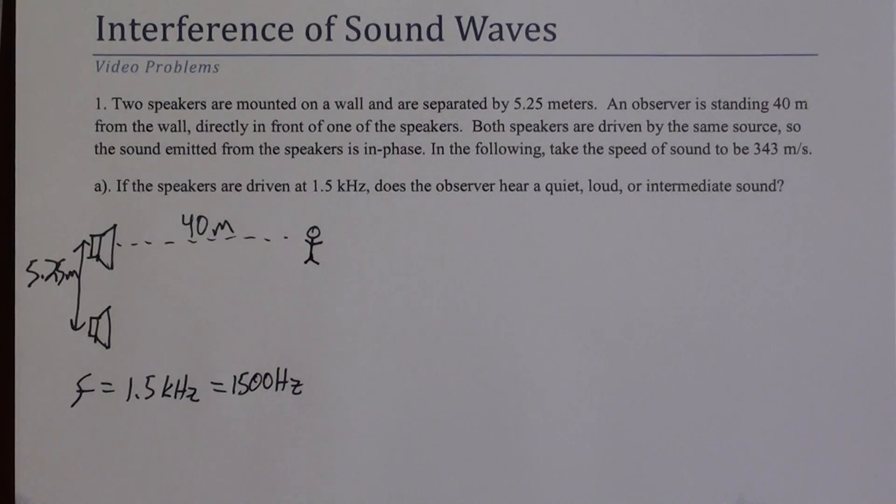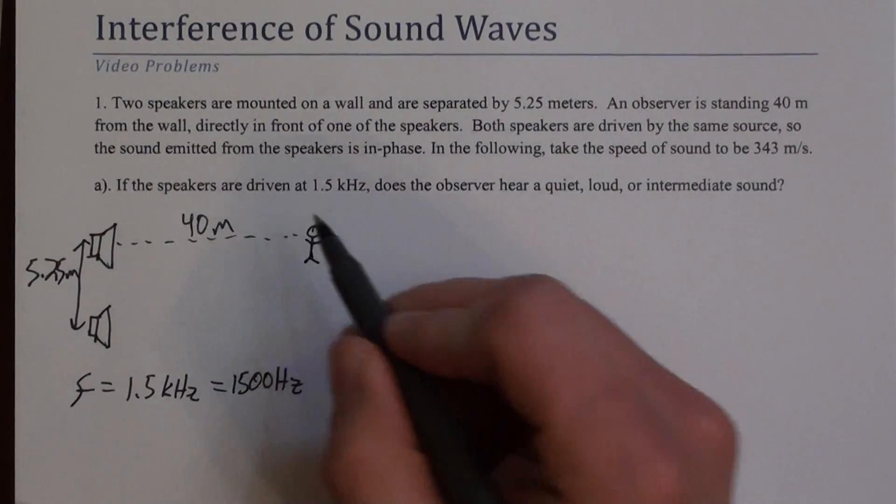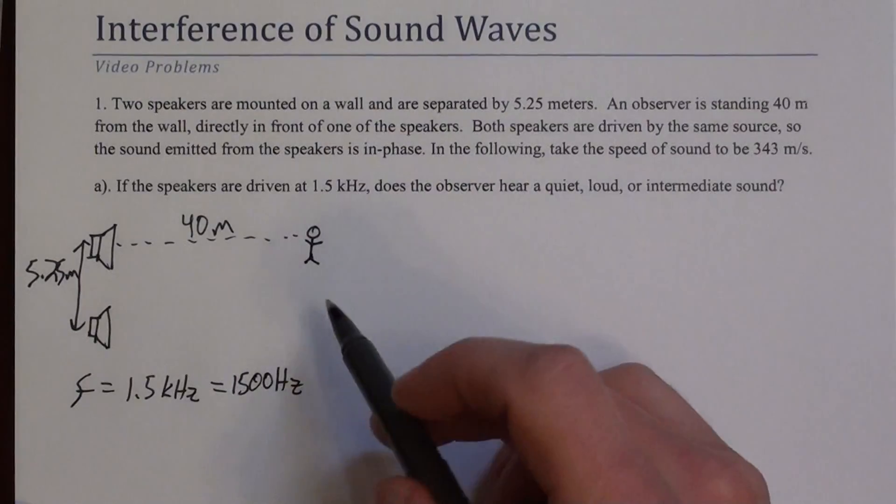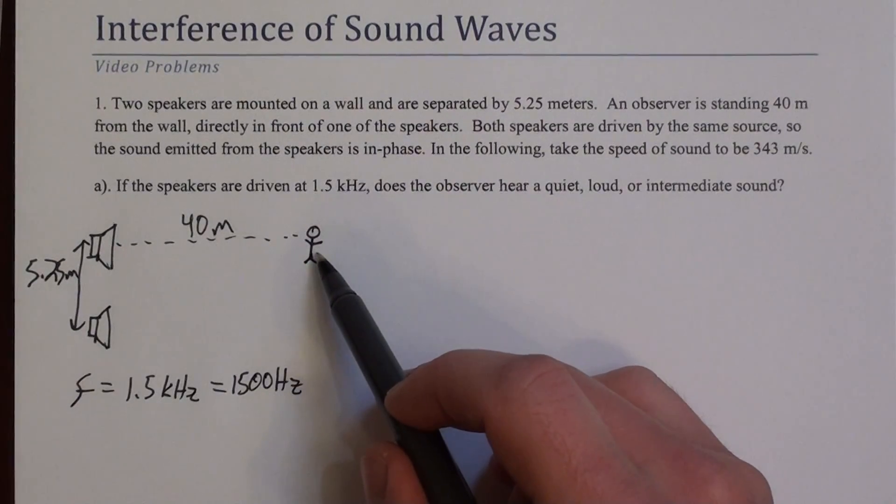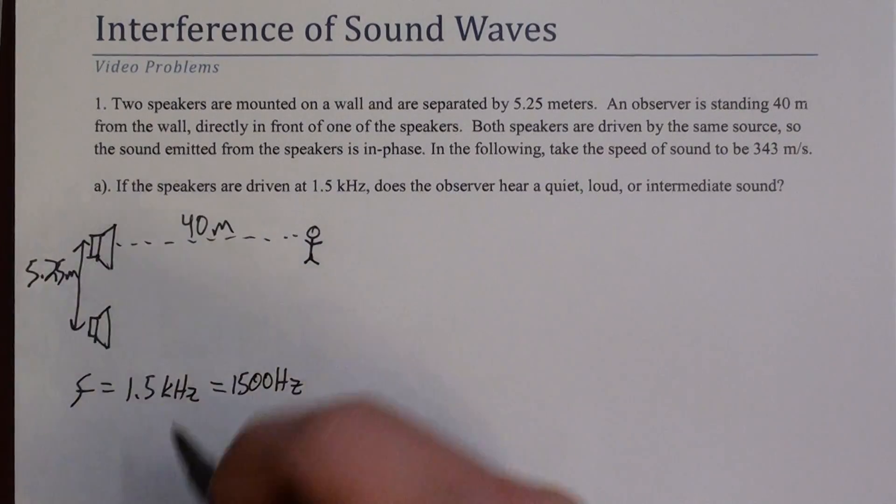So we're basically asked, is this constructive, destructive, or somewhere in between? So to answer that, we need to look at the path length difference. Because that governs whether these two waves reach the observer in phase or exactly out of phase.